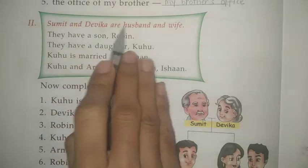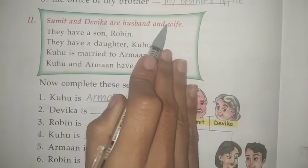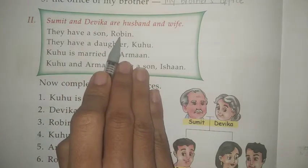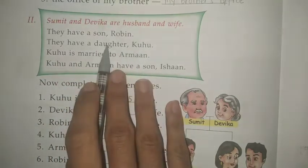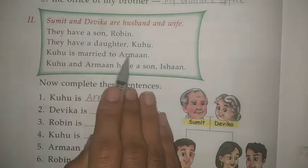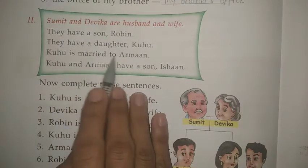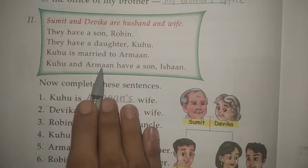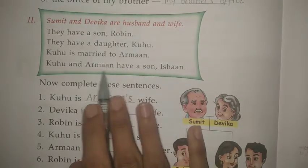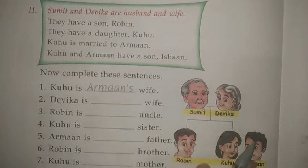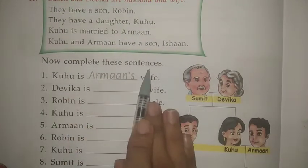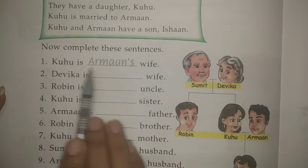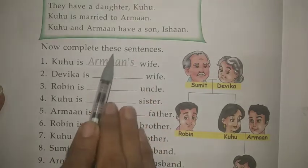Sumit and Devika are husband and wife. They have a son Robin and a daughter Kuhu. Kuhu is married to Arman — Kuhu aur Arman husband and wife hue. Kuhu and Arman have a son Ishan. Now complete the sentences. Kuhu is dash wife — Kuhu kis ki wife hai? Arman ki. Arman's wife. Next: Devika is dash wife — Devika kis ki wife hai? Sumit ki. Sumit's wife.